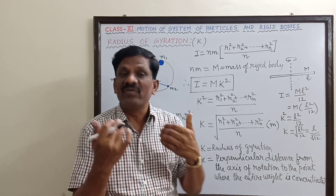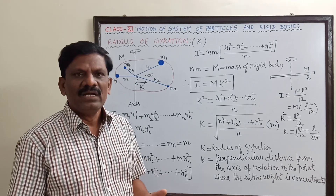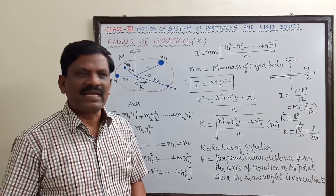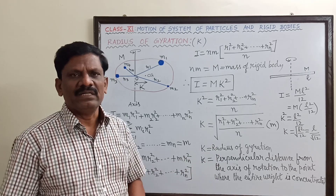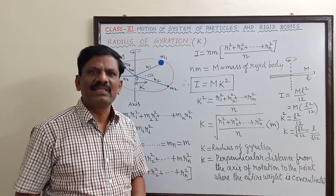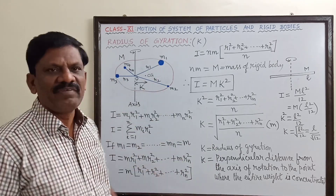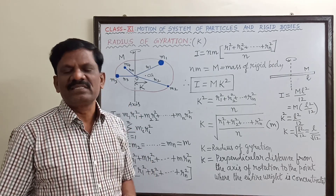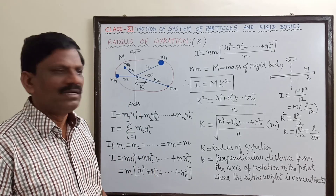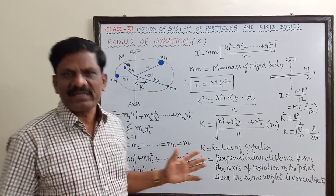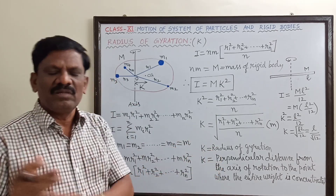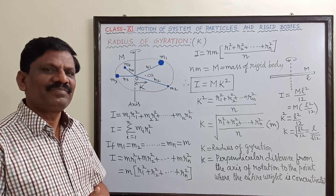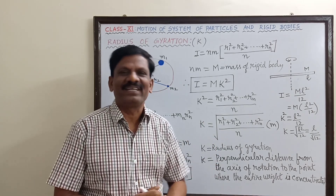Like that, for all objects — a ring, a circular plate, or any axis — the radius of gyration can be determined. Many students should remember that the radius of gyration is defined as the perpendicular distance from the axis of rotation to the point where the entire weight of the rigid body is concentrated.